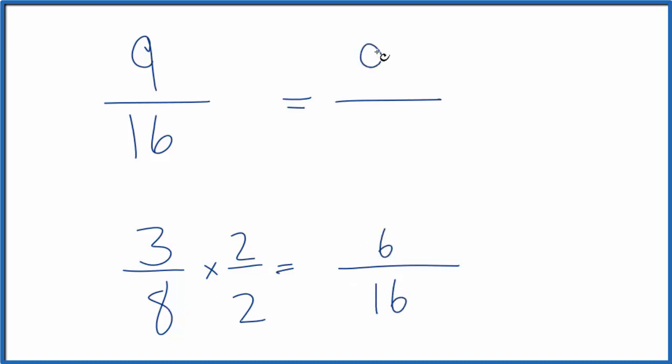And here we have 9/16. Now we have the same denominator here, 16 for both of these fractions. If we compare 9 to 6, 9 is bigger than 6. So 9 over 16 is larger than 3 over 8.